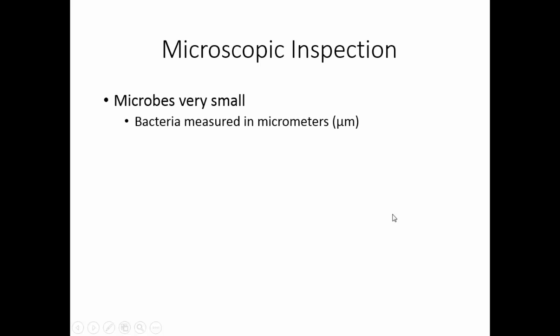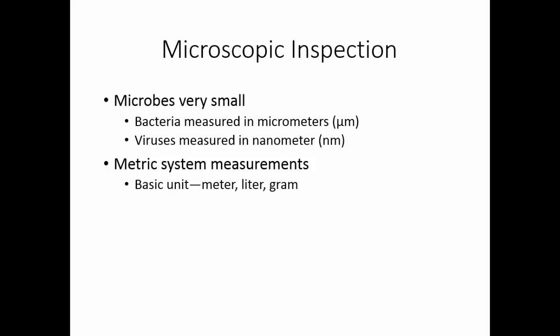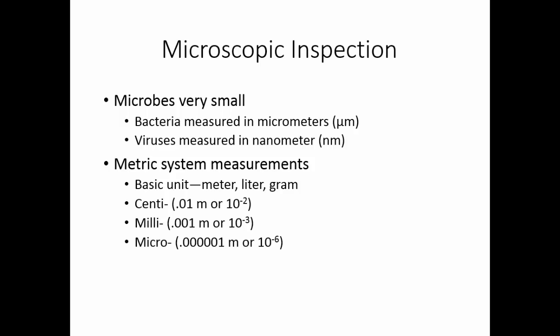Microbes are very, very small. Bacteria are measured in micrometers; viruses are measured in nanometers. In the metric system, the basic units are the meter, liter, and gram. A centimeter is one hundredth of a meter; a millimeter is one thousandth (10⁻³); a micrometer is 10⁻⁶; and a nanometer is a thousand times smaller at 10⁻⁹. To visualize this: divide a yardstick into pieces down through centimeters, millimeters, then three more divisions of ten to reach a micrometer, and three more divisions of ten to reach a nanometer — these are truly too small to imagine.